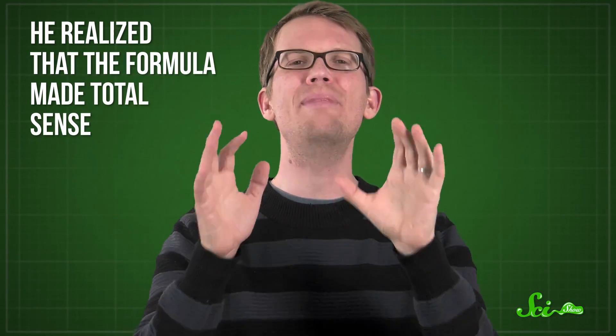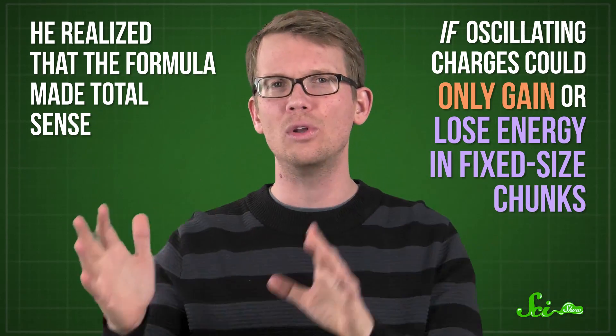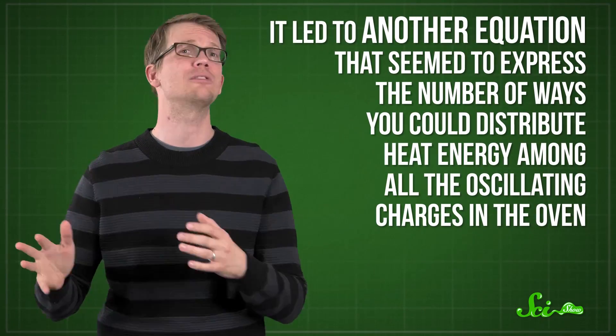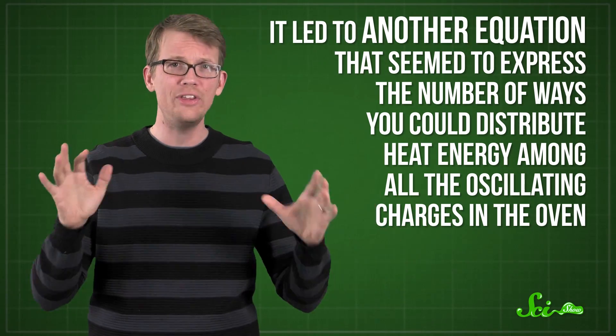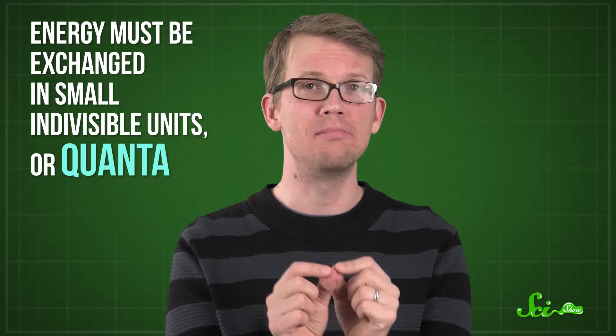But after about two months of studying this, he realized that the formula made total sense if oscillating charges could only gain or lose energy in fixed-sized chunks. Planck noticed that his law had an interesting interpretation. It led to another equation that seemed to express the number of ways you could distribute heat energy among all the oscillating charges in the oven. This interpretation relied on the math for how many ways there are to put, say, ten balloons into four groups. But the equation for that only makes sense if you're talking in whole numbers. Like, you can't put one balloon into two different groups, because then you just end up with a massive shredded latex. So for the equation to make any sense, some of the terms have to be whole numbers. Planck wanted to interpret his law as describing how heat could be distributed among oscillating charges. But he realized that for it to make sense, he had to make an assumption like the one with the balloons — that energy is grouped into discrete packets that have to stay whole. You can't have half a packet.